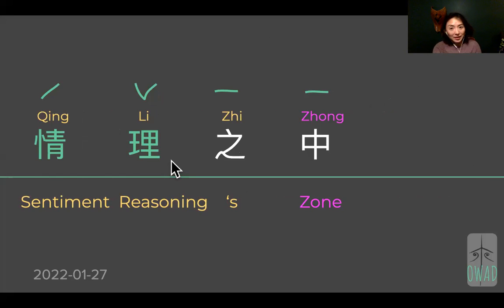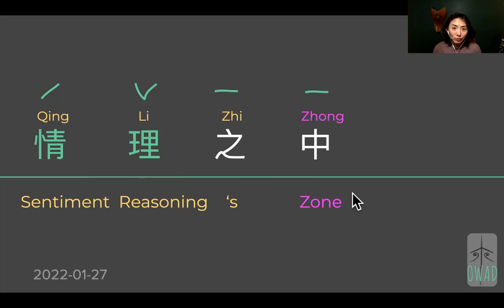This is more like contemporary Chinese. And 情理之中 overall means it's reasonable — it's within what you can understand both emotionally and intellectually, that that's how the events would unfold, that's how things are going to turn out. That's reasonable. This is your assessment of a situation.